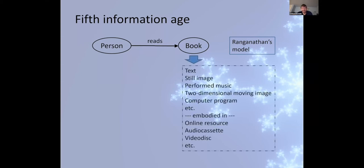However, in the Fifth Information Age in the 21st century, Ranganathan's book has developed into a huge range of content: text, still image, performed music, etc., embodied in a wide range of carriers: online resource, audio cassette, etc. The terms in this diagram are in fact content types and carrier types taken from RDA itself, in turn based on the RDA ONIX framework for resource categorization. So the book is a metaphor for this huge range of content and carriers.